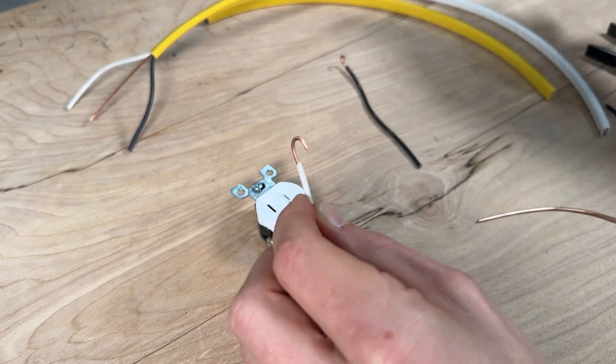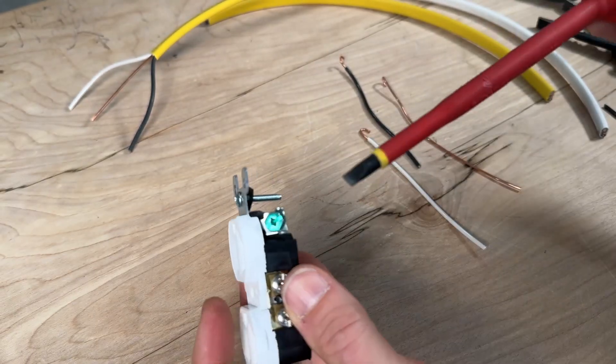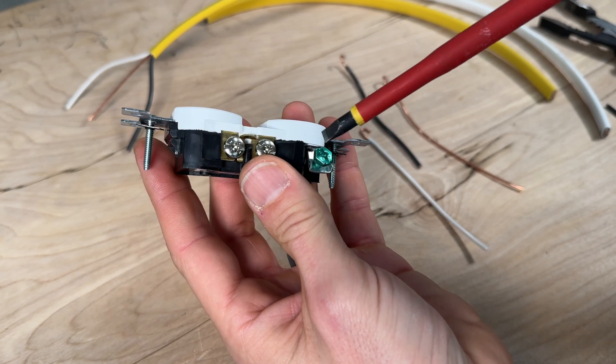We'll do the same thing here for our bare ground with the jaws, making our J hook. Then we'll start off in the order of operation that is ideal, which is the ground first.